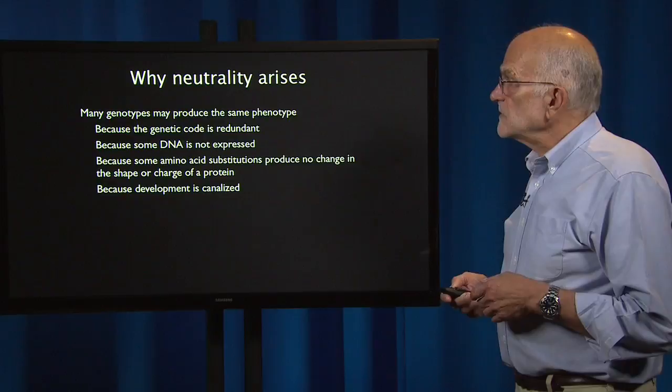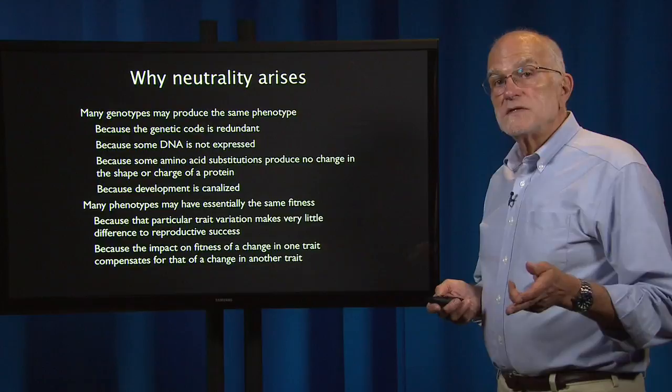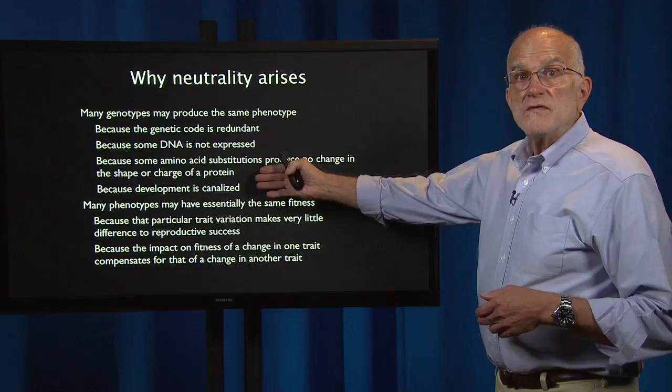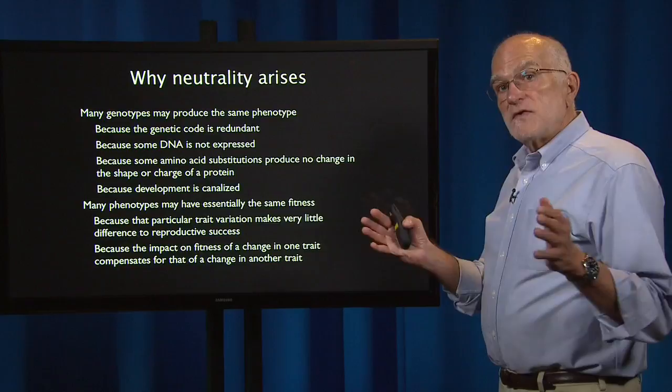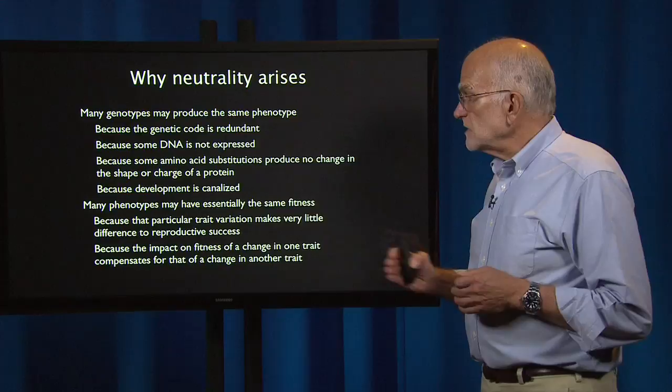The other major reason is that many phenotypes may have essentially the same fitness. So even if you produce a phenotype, there is still another level at which randomness or neutrality can arise — either because that particular trait is varying in a way that makes very little difference to reproductive success, or because the impact on fitness of a change in one trait compensates for that of a change in another trait.